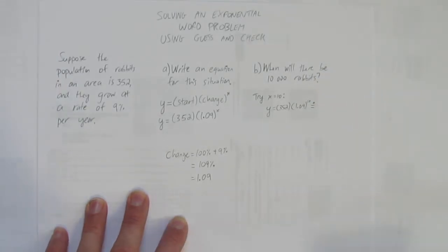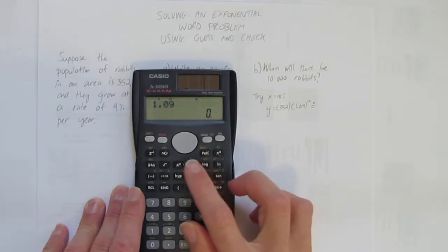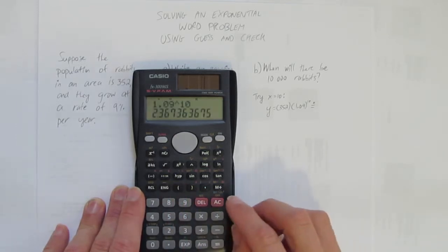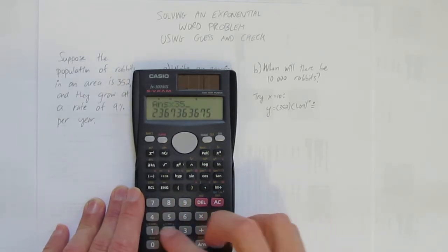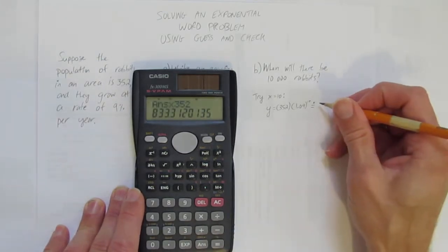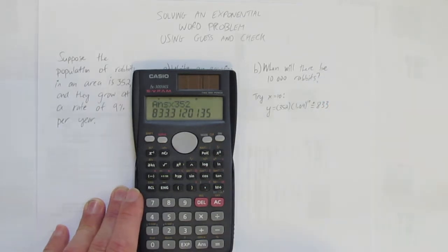but my calculator will tell me. I always recommend punching in the exponent part first. Some calculators can handle the order of operations, some can't. 1.09 to the power of 10 equals times 352. And I'm going to round to the nearest rabbit, because rabbits are animals.